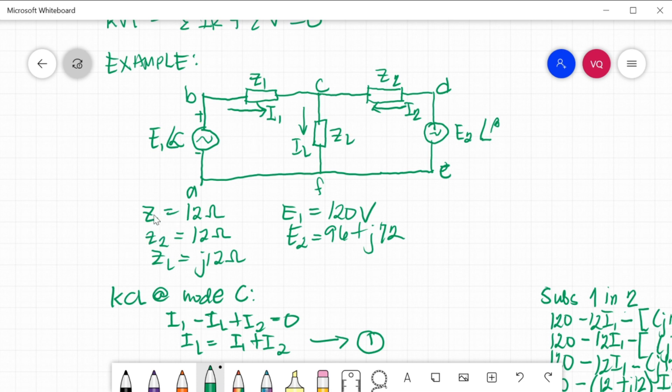The impedances values: Z1 is equal to 12, Z2 is 12 ohms, ZL has J12, E1 is 120 volts, E2 is 96 plus J72.